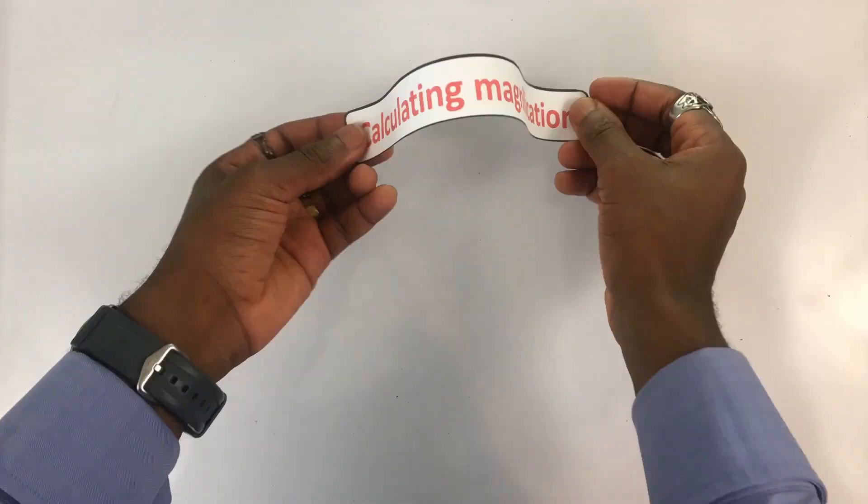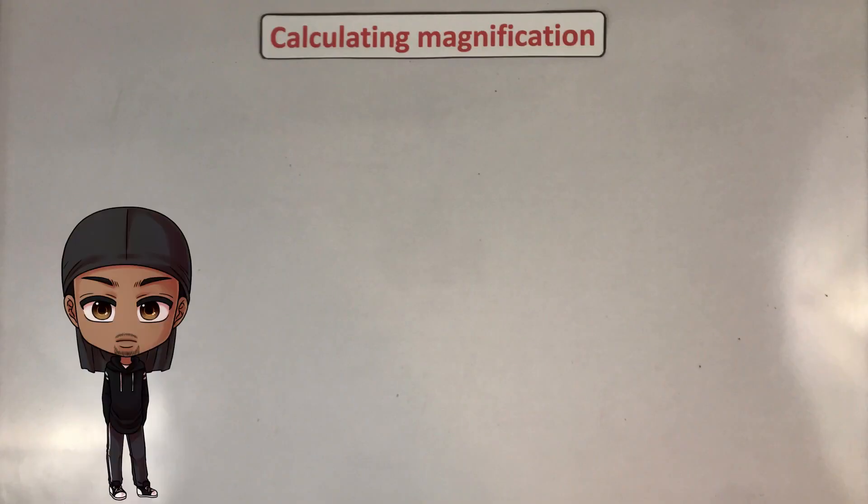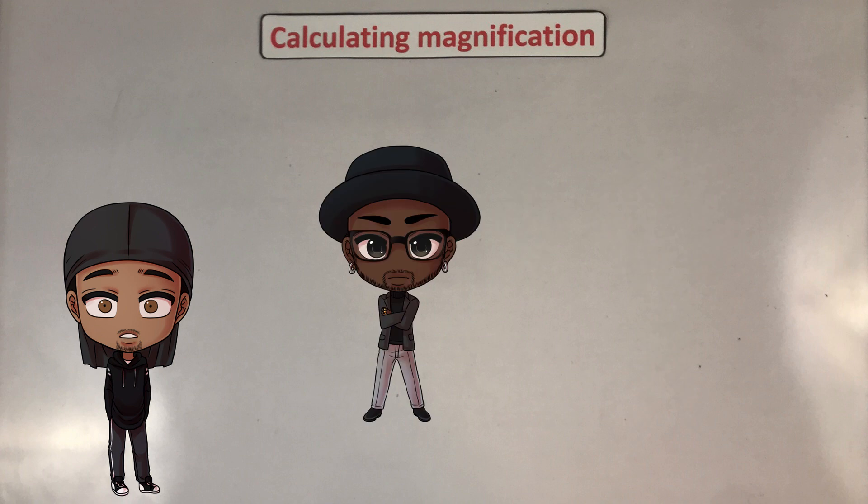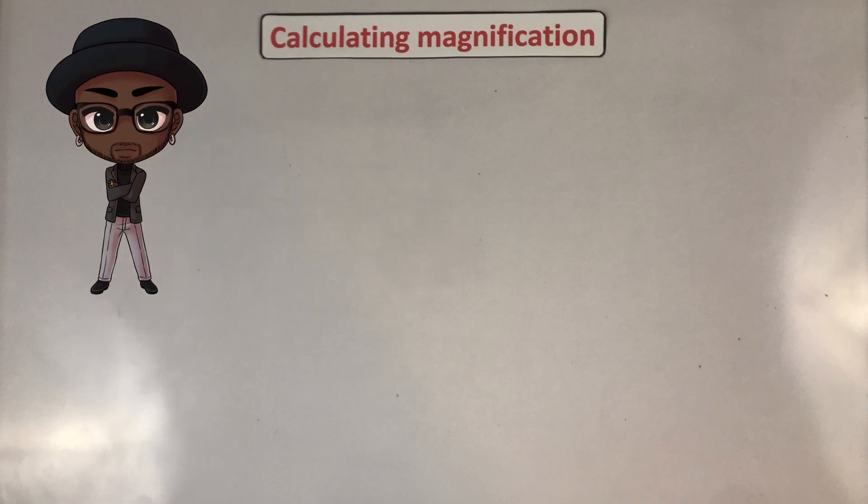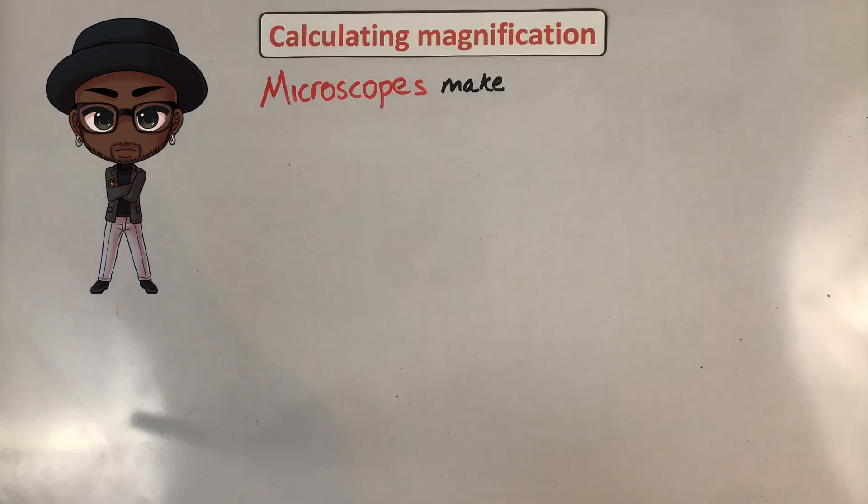And now for the calculation. Ugh, this is boring. Uncle, can I go to the toilet? No. So to calculate magnification and size, you need to fully appreciate that microscopes make small things bigger. If you truly appreciate that sentence, then working out the calculation is light work.